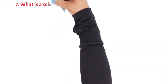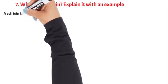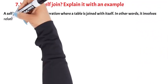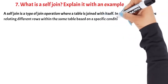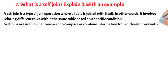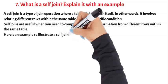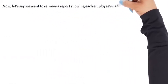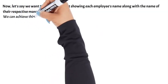Question 7: What is a self-join? Explain it with an example. A self-join is a type of join operation where a table is joined with itself. It involves relating different rows within the same table based on a specific condition. Self-joins are useful when you need to compare or combine information from different rows within the same table. For example, consider a table representing employees in an organization, where each employee has an ID, a name, and a manager ID that refers to another employee who is their manager. The manager ID column establishes a relationship within the same table. Let's say we want to retrieve a report showing each employee's name along with the name of their respective manager. We can achieve this using a self-join.